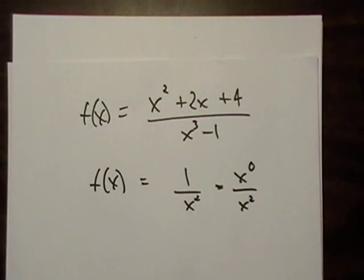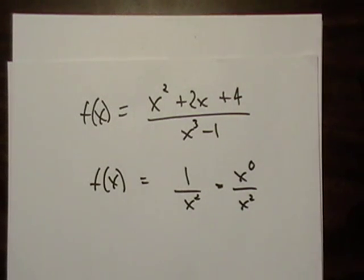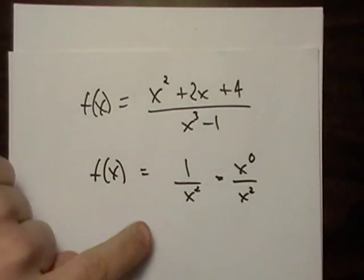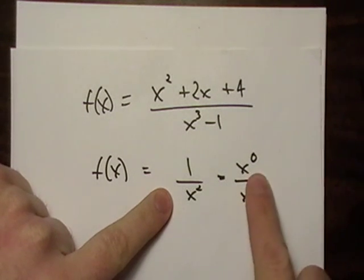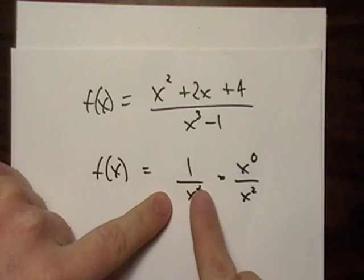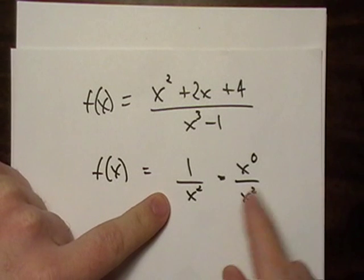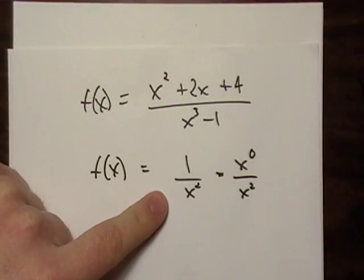Okay, today we're going to graph rational functions. A rational function, as you know, is just a polynomial divided by a polynomial, even a very simple one, like x to the zero, which is actually just the same as one over x squared. That's also a rational function.